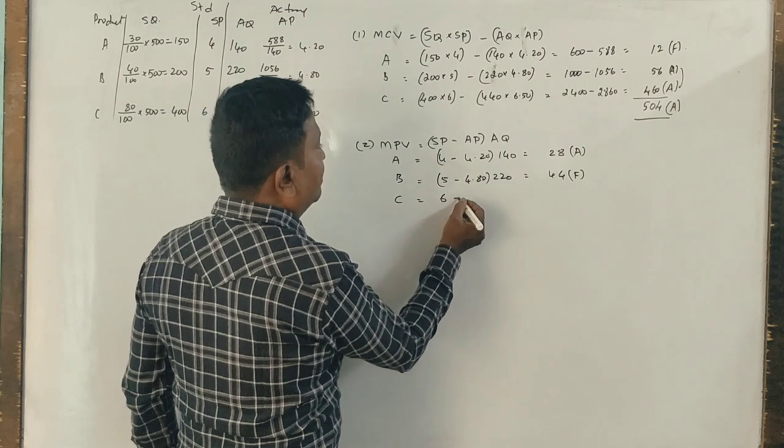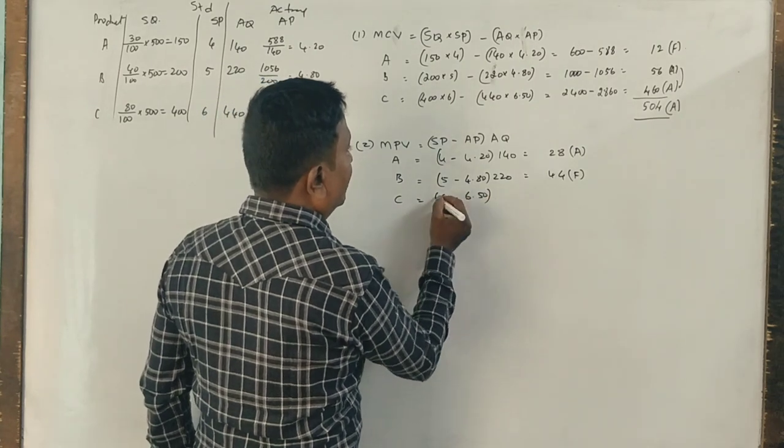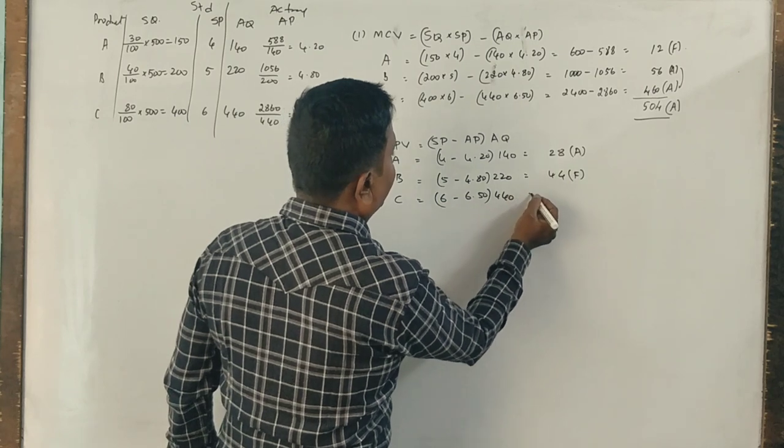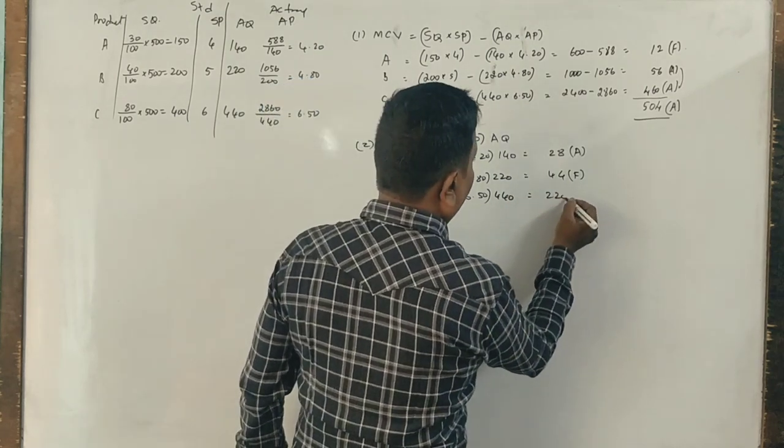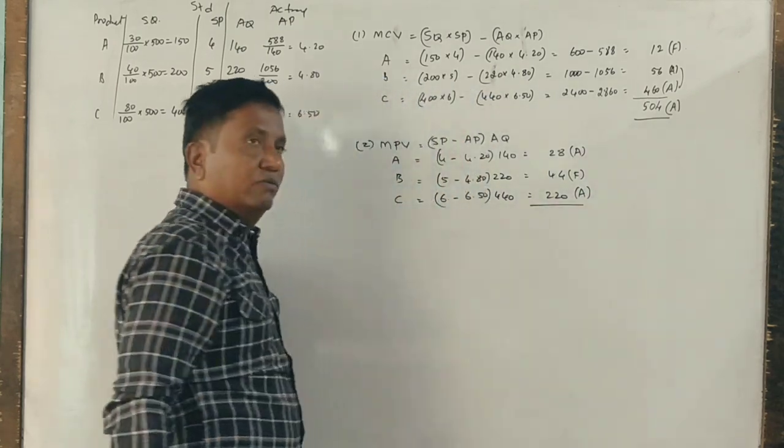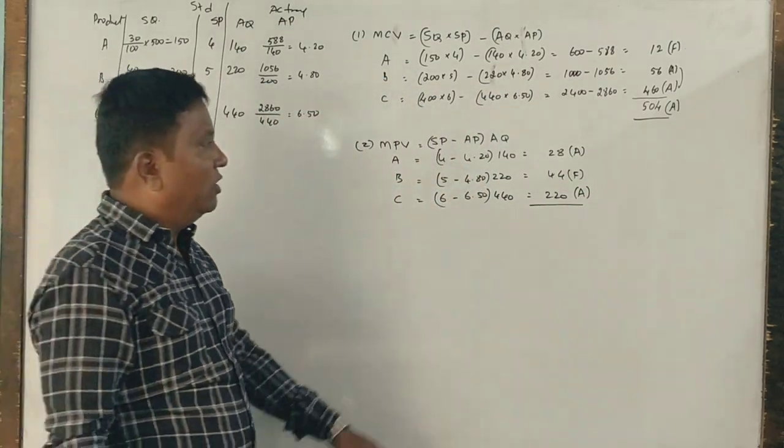C: 6 minus 6.5 into actual quantity 440 is 220 adverse.